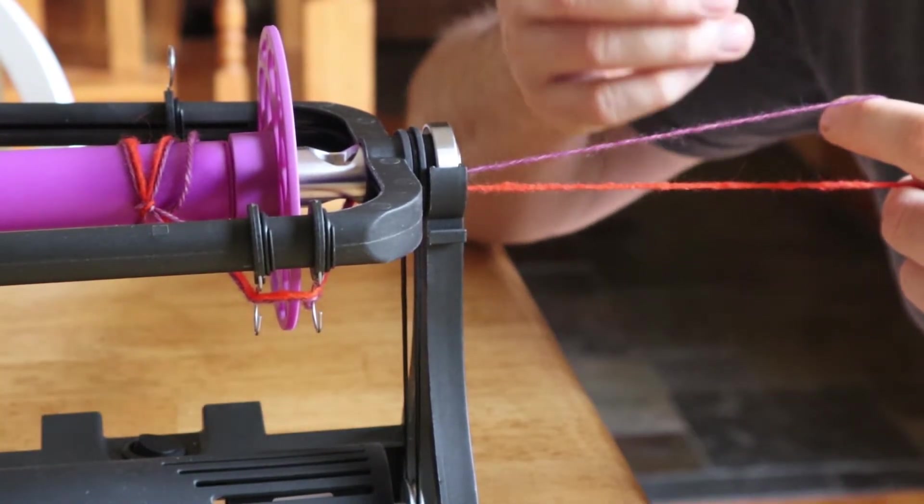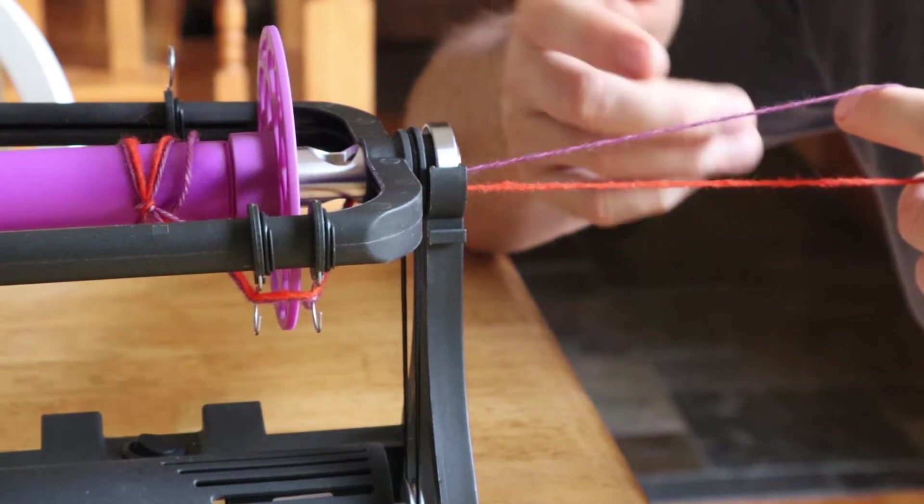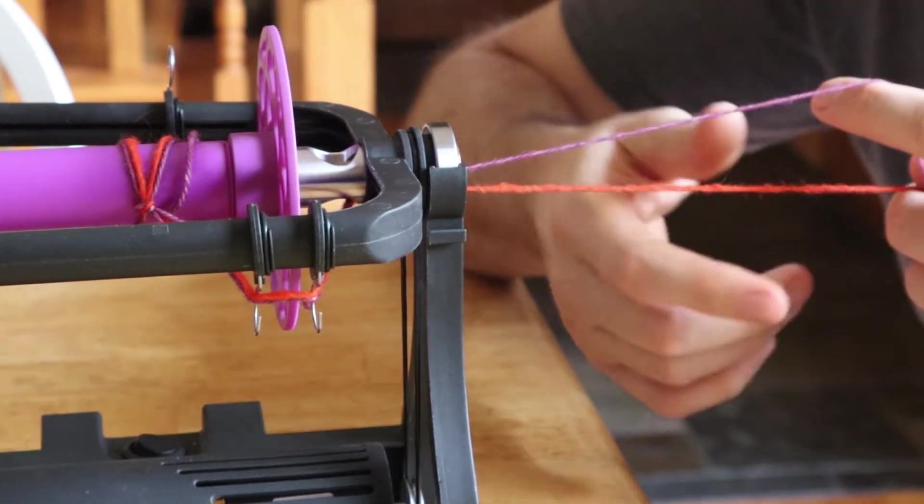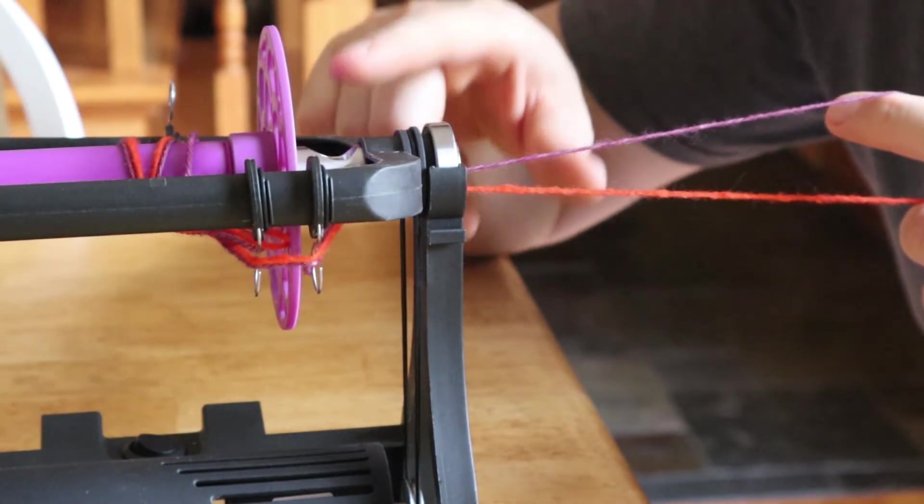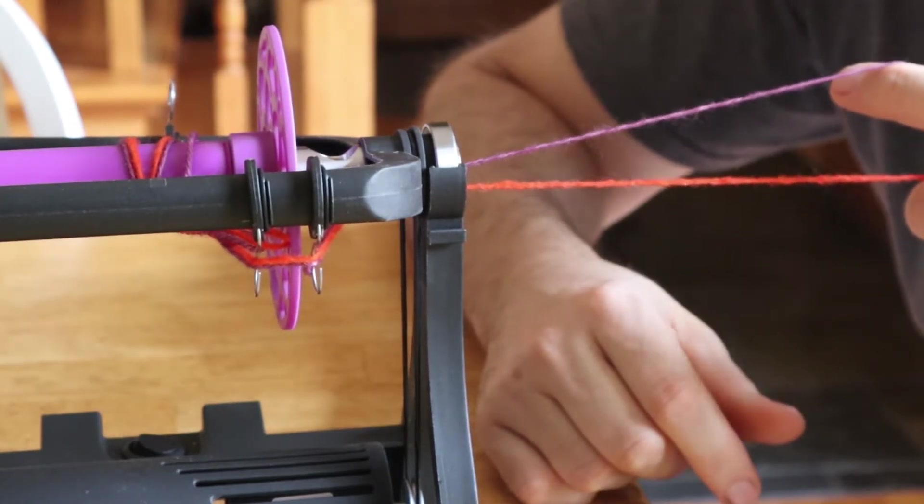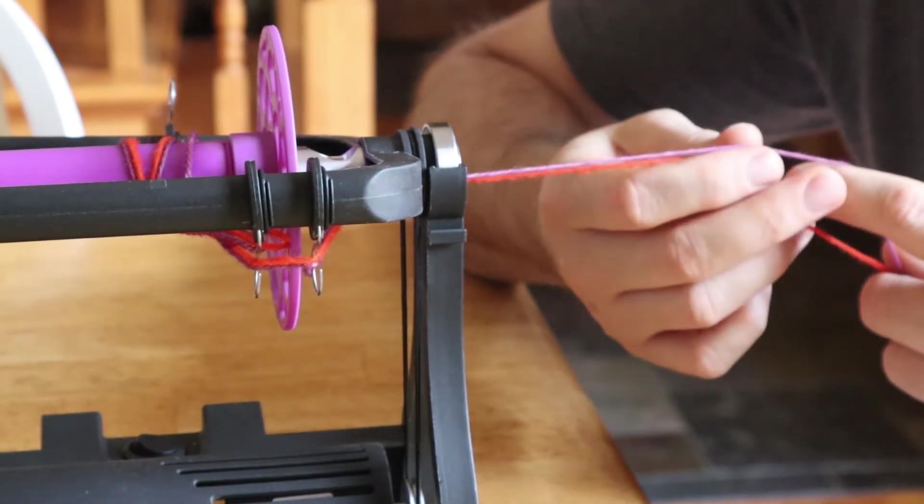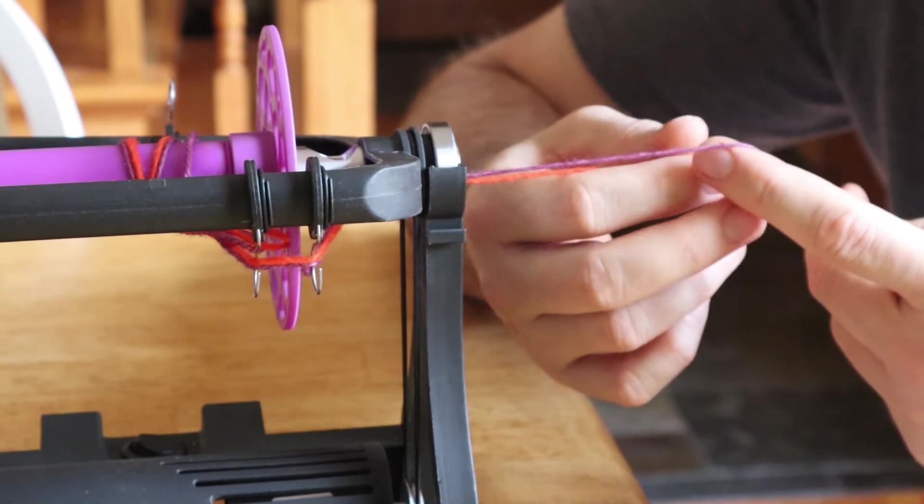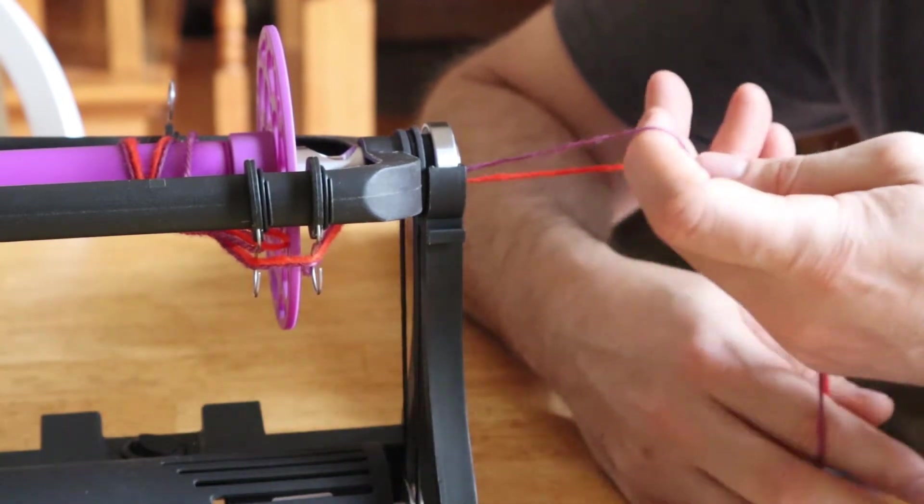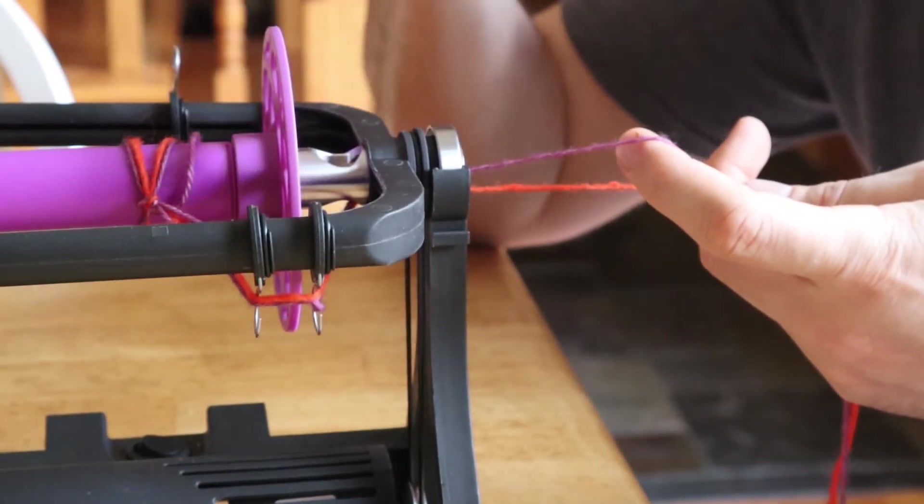Before I do that though, I think I have to explain a few core principles on how the modern flyer works. So this is a scotch tension spinning wheel but these same principles will apply to irish tension or double drive wheels which are the three most common types of spinning wheels out there. And this is an e-spinner but a treadle wheel will work the same way.